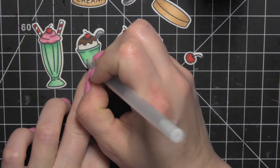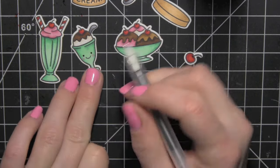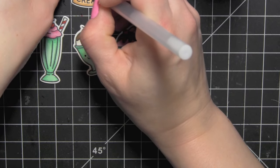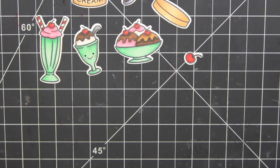For the eyes on the dish and the ice cream bucket I'm going to use the Sakura black gel pen to give those eyes a little more definition.